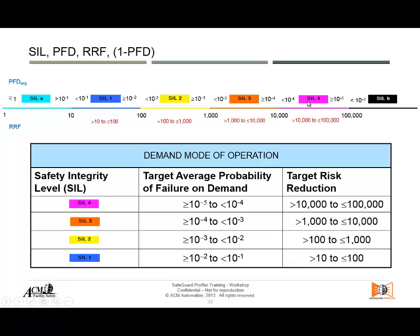Usually we don't see higher than SIL 4 — that represents really too much risk. SIL 4 is very complicated and not needed that often in industry. You might see SIL 4 in military applications, nuclear industry, or other specialized places. SIL 3, however, does appear — for example, in high integrity pressure protection systems (HIPPS) and boiler or burner management systems (BMS).